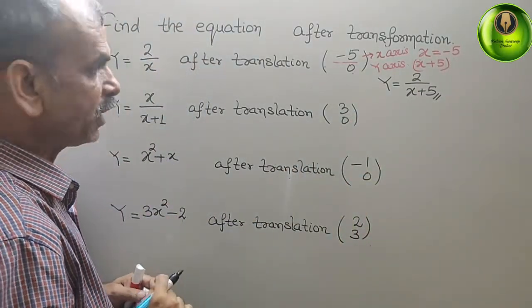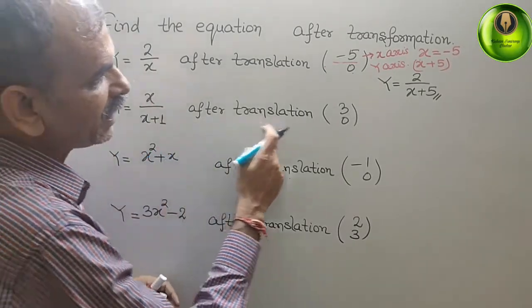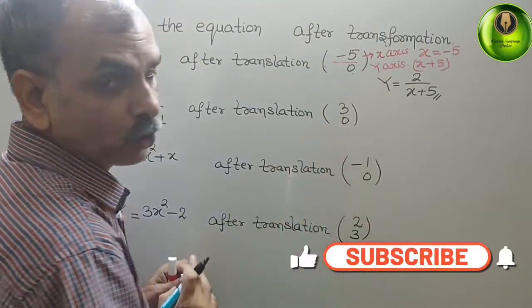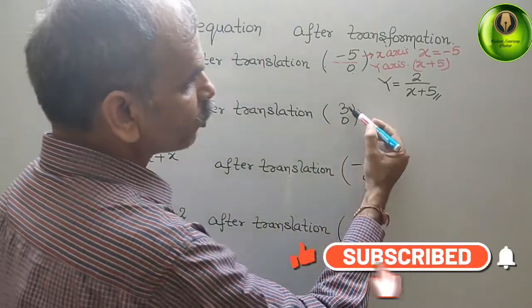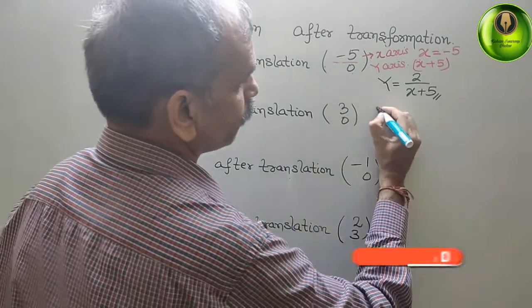Comes to second one. What they have given? x by x plus 1. After translation, 3 and 0. So I have already told what is this 3? x equals 3.